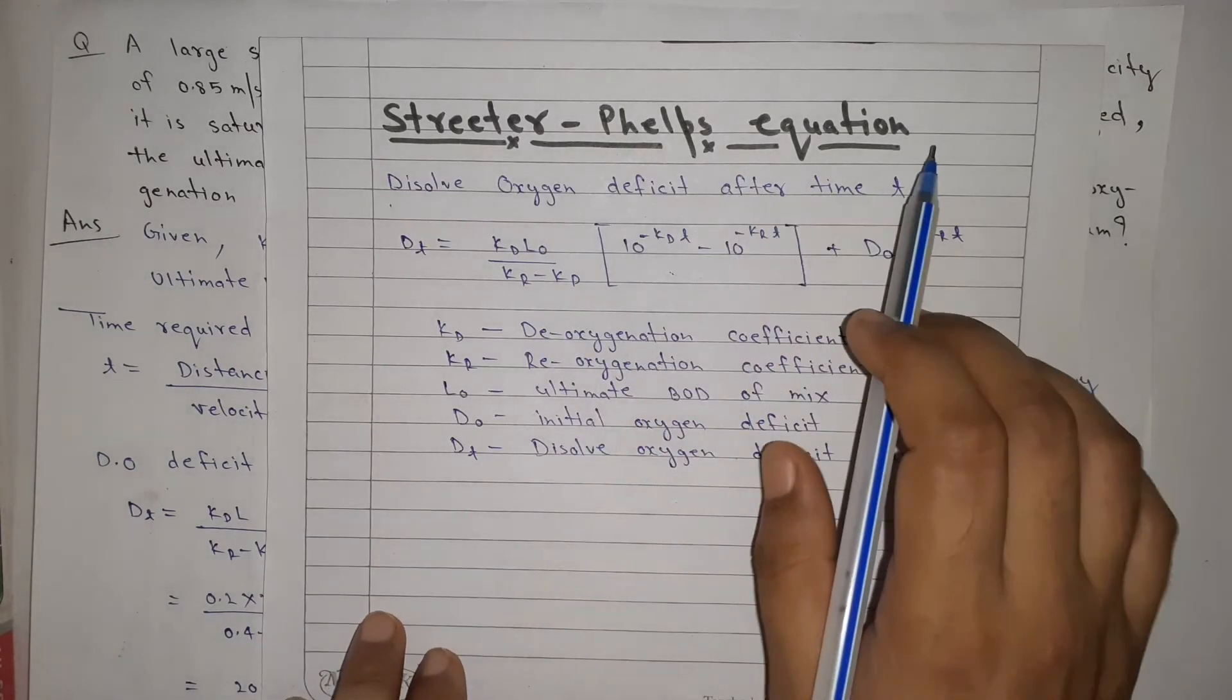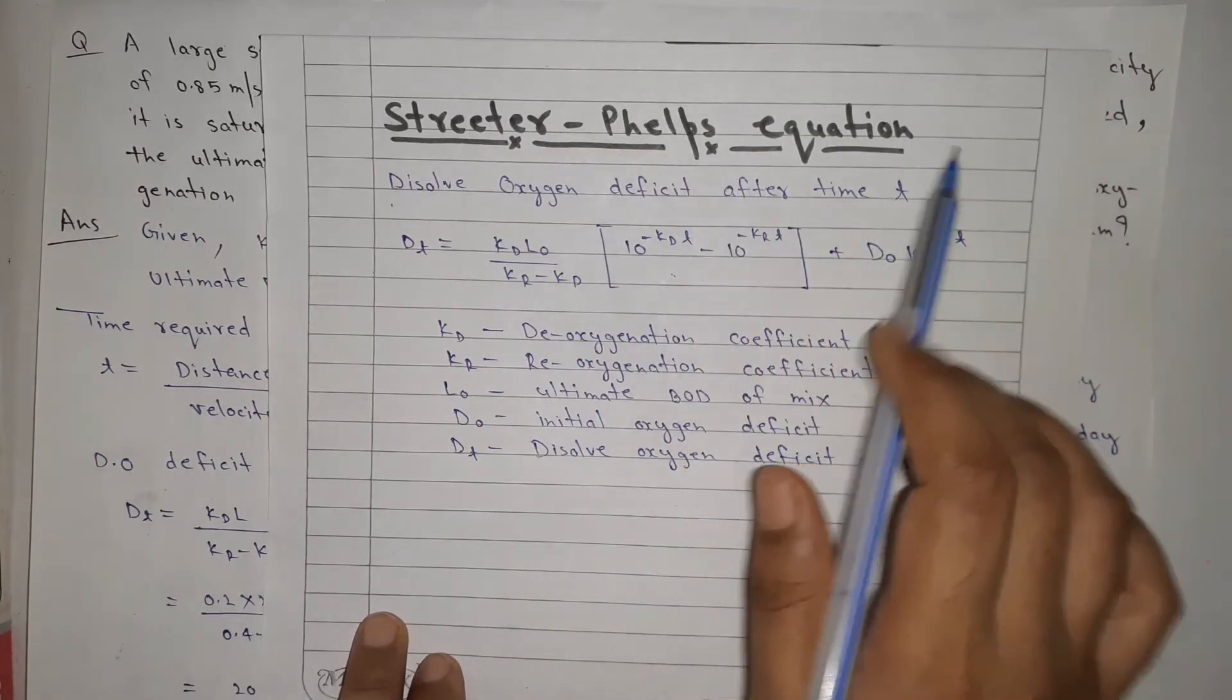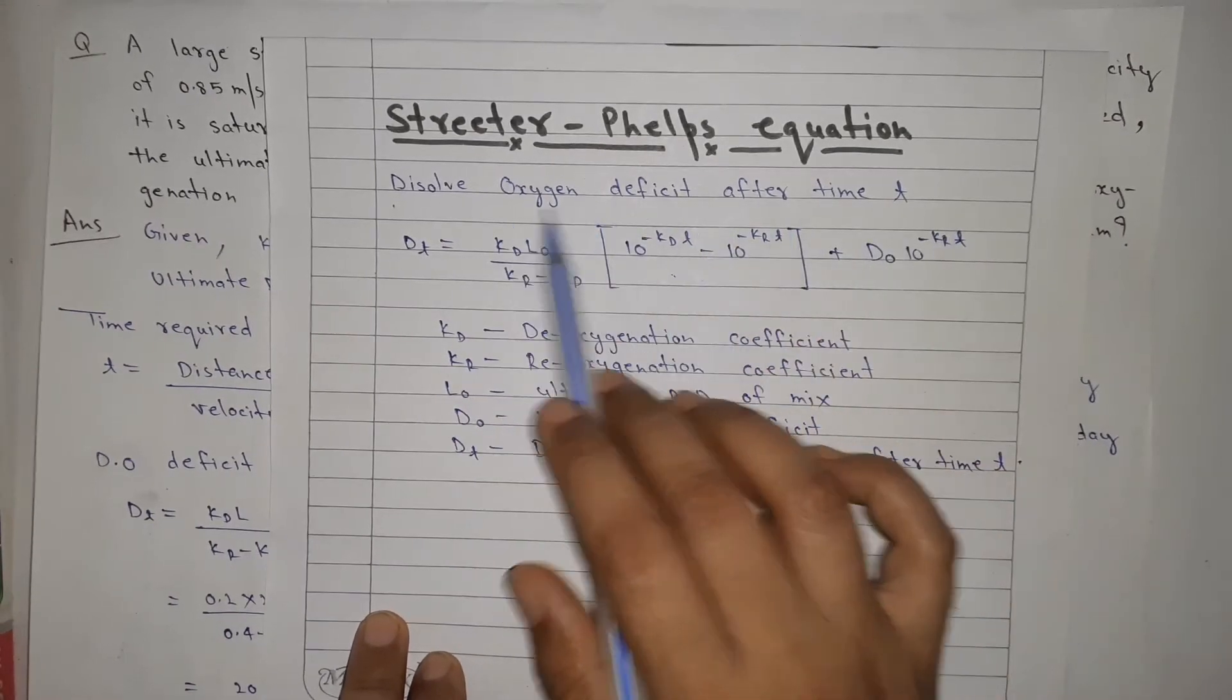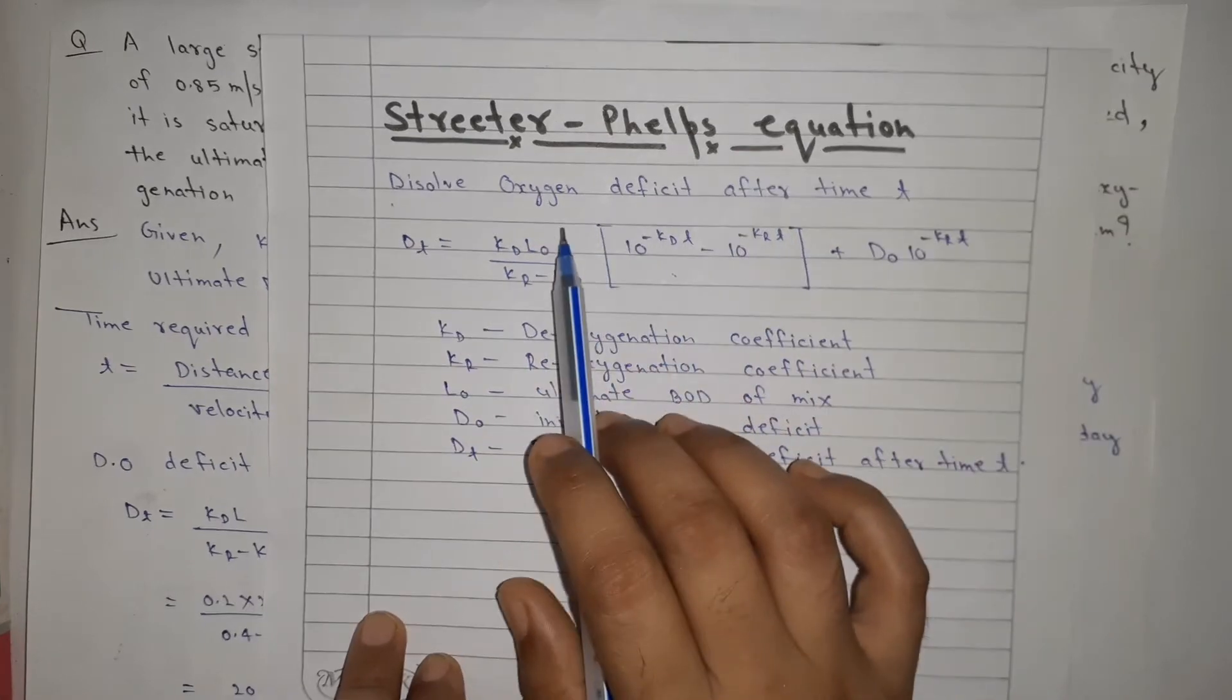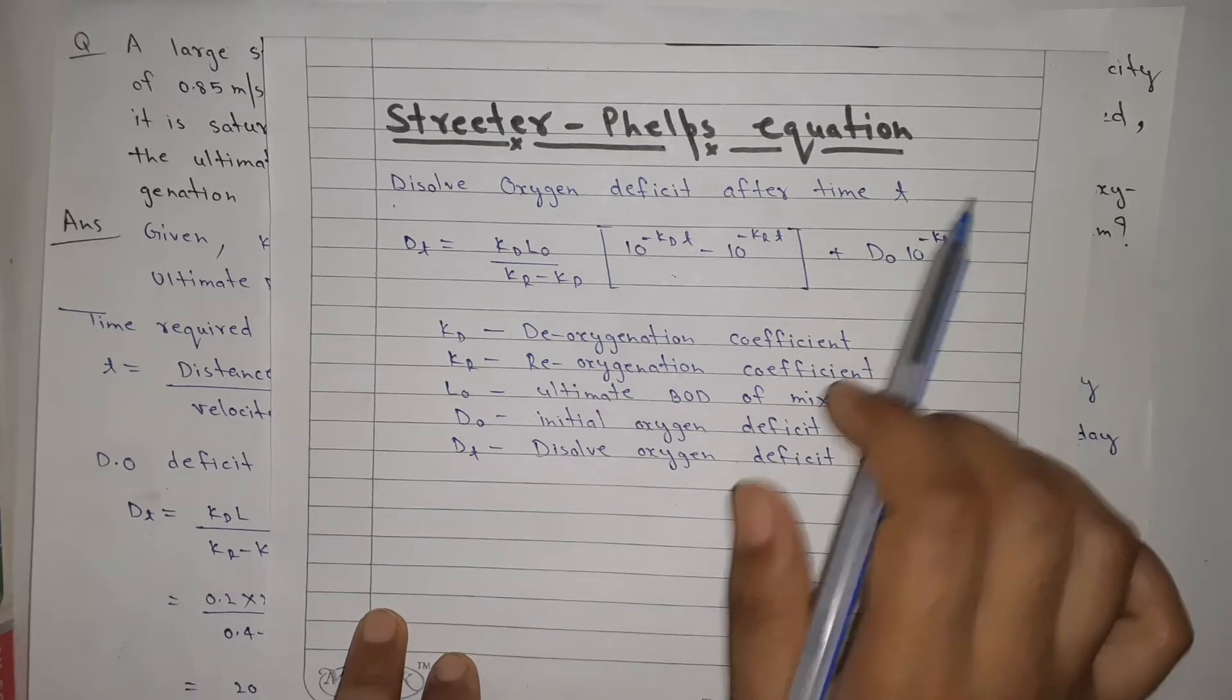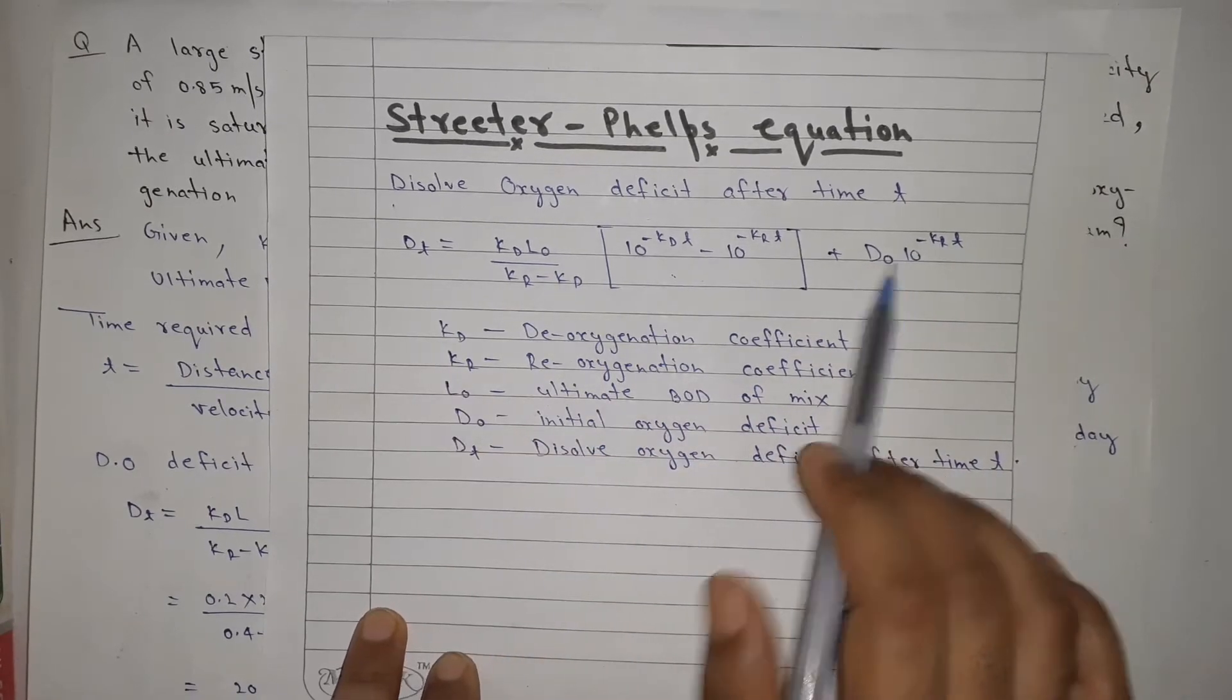Streeter-Phelps Equation. What is this equation? Dissolved Oxygen Deficit After Time T. If there is time T, then how much oxygen deficit will be? That is Streeter-Phelps Equation.